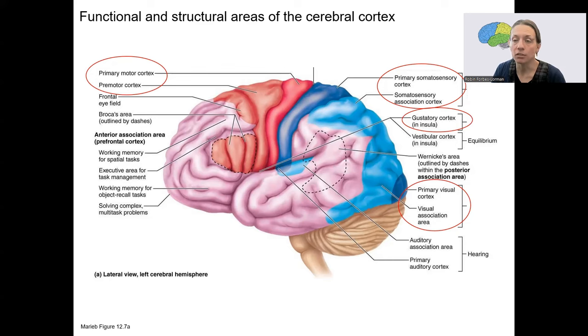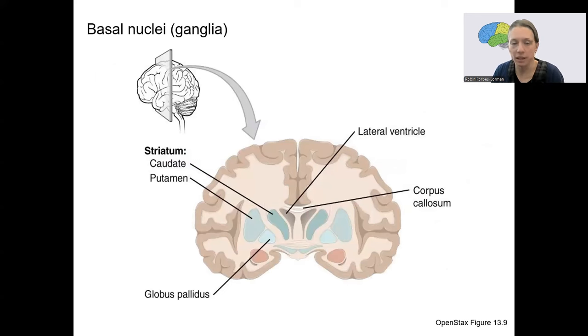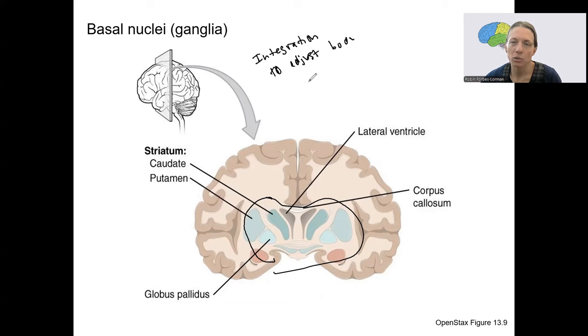Second component of the cerebrum is deep to this. So not the cortex, but those deep nuclei called the basal nuclei. So if we're taking another frontal section, we're looking at this region in here, deep to the cerebral cortex. These nuclei, more than one of them, are involved in integration to adjust the body during ongoing movements.